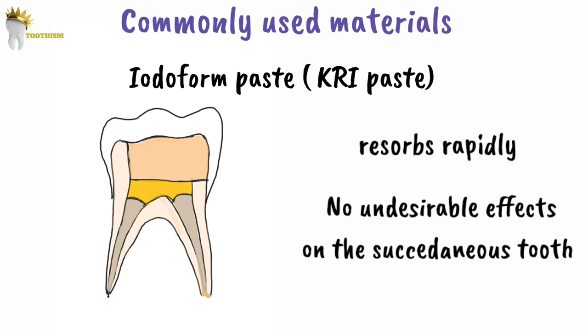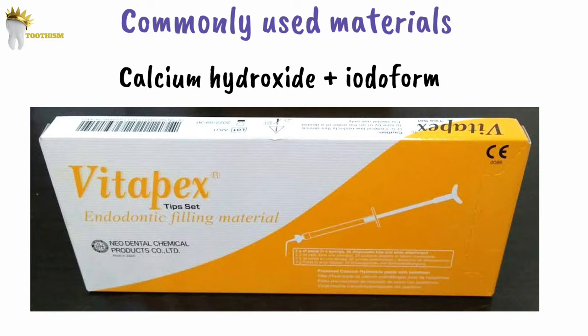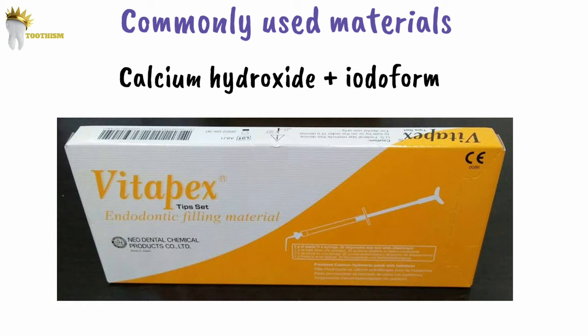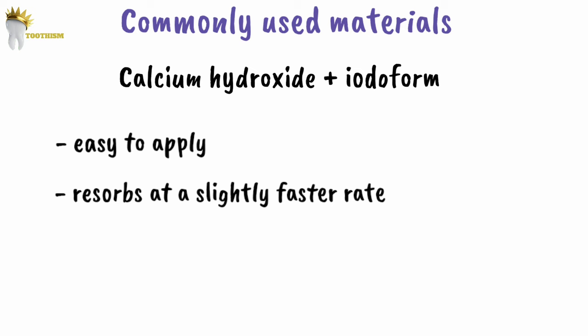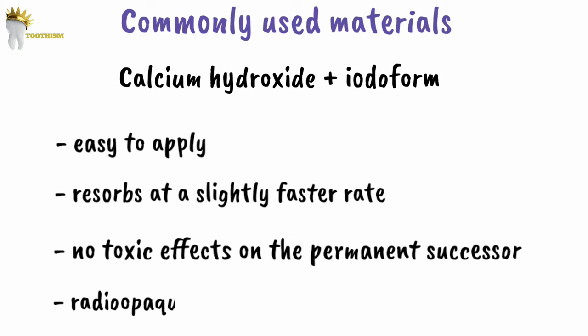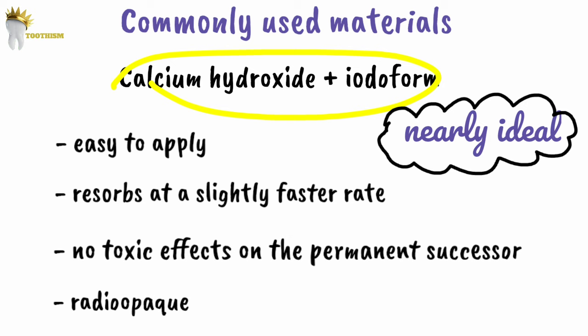The next material is a calcium hydroxide and iodoform mixture marketed as Vitapex. Research found this material is easy to apply, resorbs at a slightly faster rate than the roots, and has no toxic effects on the permanent successor. It is also radiopaque. For these reasons, it is considered a nearly ideal primary tooth filling material.